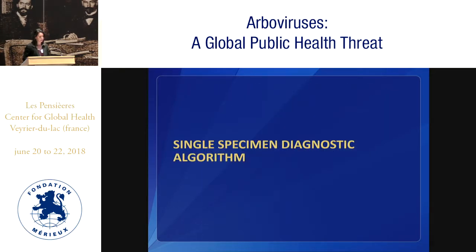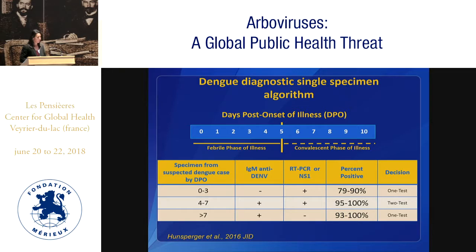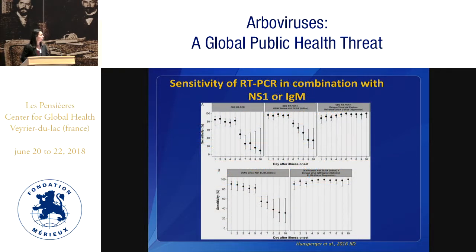Now I'm going to jump quickly to single specimen diagnostics. At the CDC, we were really interested in knowing whether, instead of requiring paired specimens to make a diagnosis, we could just use a single specimen and have it tell you whether it's dengue or not. We found that in the first three days of infection, RT-PCR is quite sensitive and you could most of the time detect the dengue virus infection. When you get to four to seven days, you actually need to add the IgM test to improve your probability of detecting. And then after seven days, there was really no utility of RT-PCR or NS1, unless you had a lot of primary infections — but in a dengue endemic region, that was not useful.